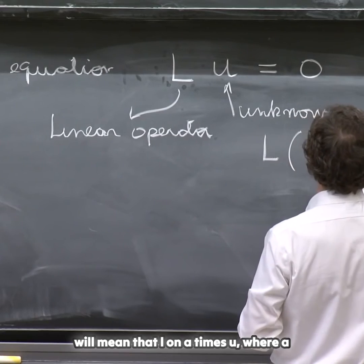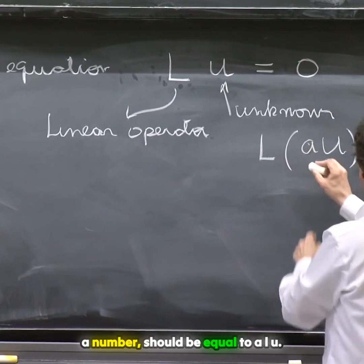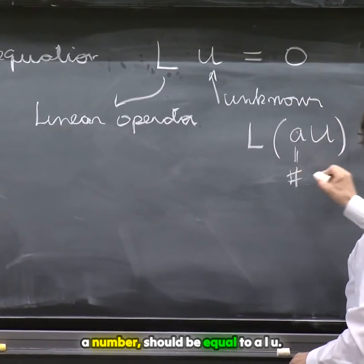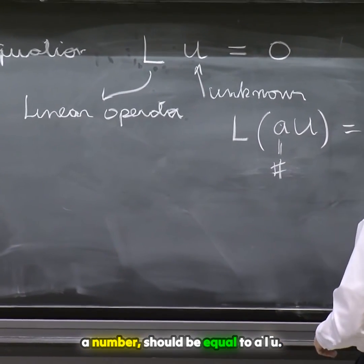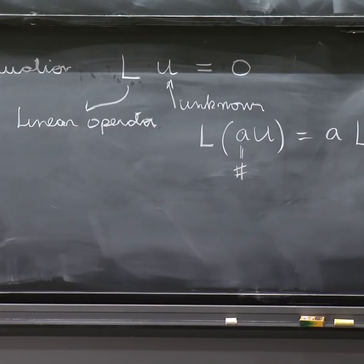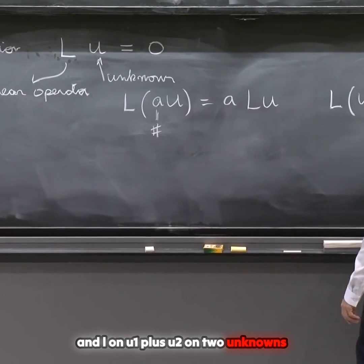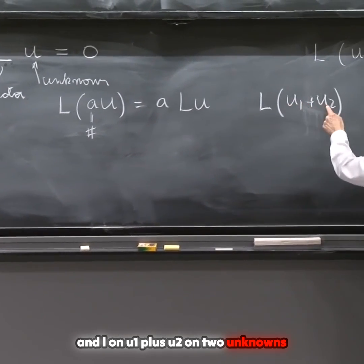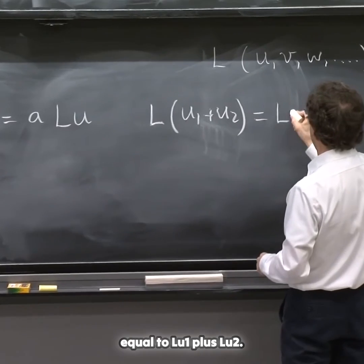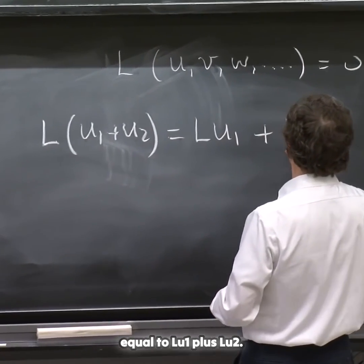on A times U, where A is a number, should be equal to A*L(U), and L on U1 plus U2, on two unknowns, is equal to L(U1) plus L(U2).